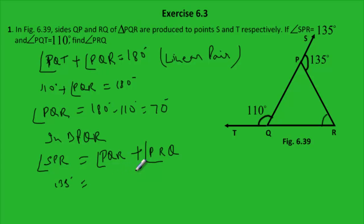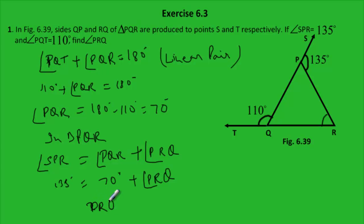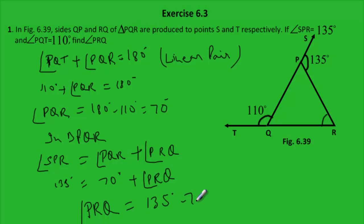Substituting the given values: angle SPR is equal to 135 degrees, and angle PQR we found is equal to 70 degrees, plus angle PRQ. This gives us angle PRQ is equal to 135 minus 70, which equals 65 degrees.